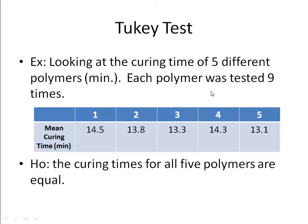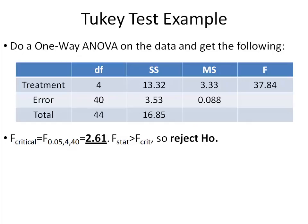So, to begin with, our null hypothesis will state that the curing times for all five polymers are equal. So, you should be able to see that because the only thing that we're changing is the polymer type for the curing test, we should do a one-way ANOVA on the data. And when we do that, you get the following output from doing a one-way ANOVA with a mean squared error of 0.088 and an F value of 37.84.